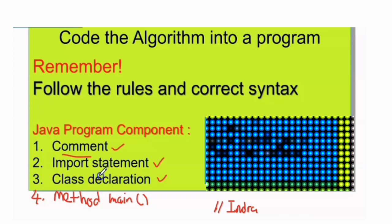In Java, every line of code that runs must be inside a class. The name of the Java file must match the class name, and the class name should always start with an uppercase letter. In the last component, we have the main method. Each and every Java program starts execution from the main method. The main method must be defined in the class, and you write it as: public static void main, with a String array parameter, followed by opening and closing curly braces.